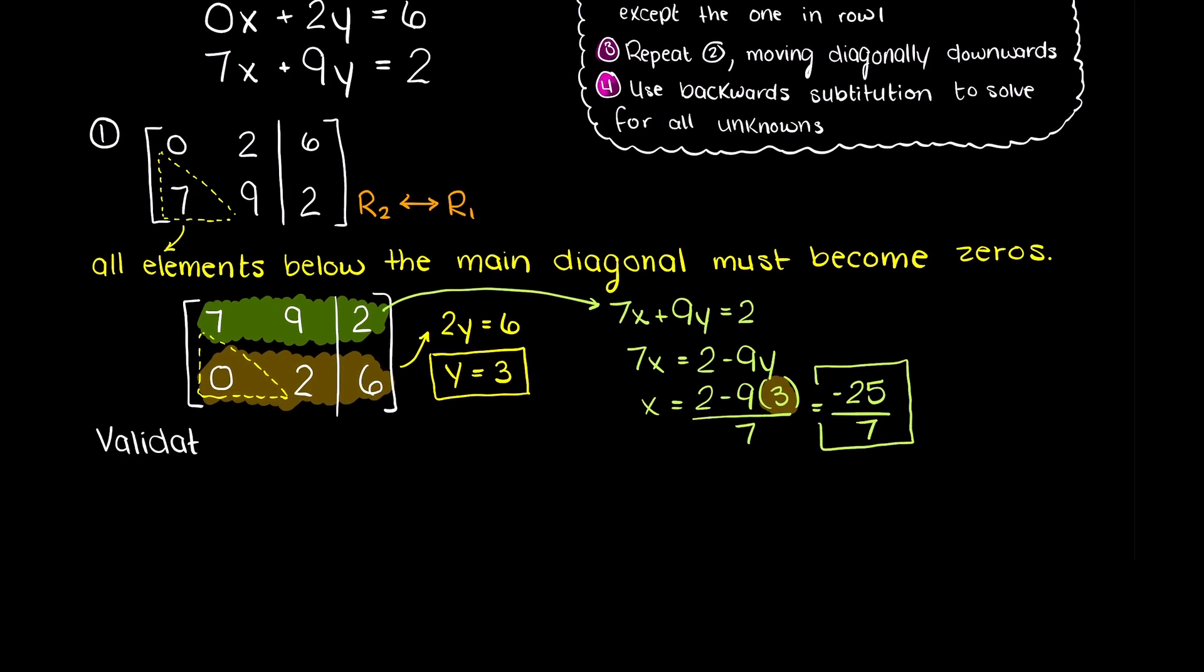Now, with Gauss elimination, we can actually go back and quickly validate our answers. Using our initial linear equations, we can just plug in our newly solved variables, and if the left and right hand side of our equation don't equal, then we know that we made a mistake somewhere.